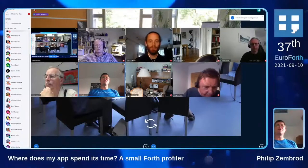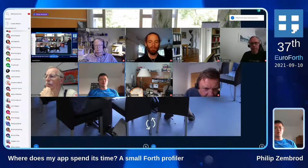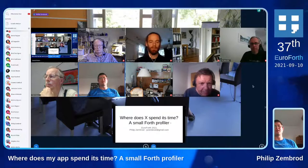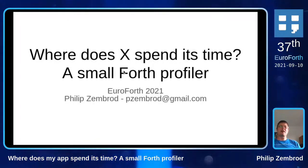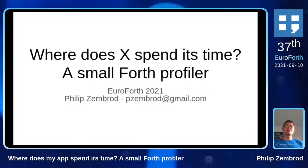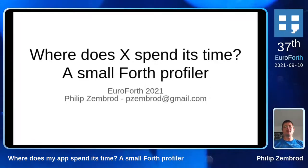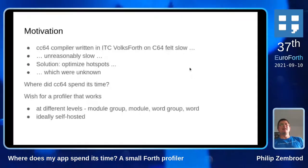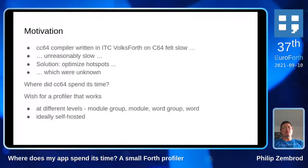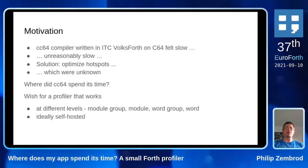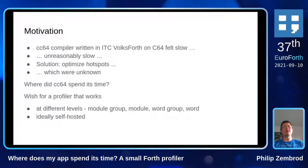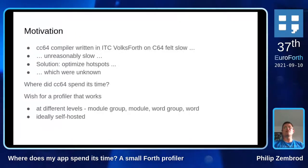I'm back with another recipe from the retro kitchen. After my small C compiler implemented in Forth that I presented last year, this time I want to talk about a profiler. At some point I was wondering where does this small C compiler spend its time. This is a C compiler on an indirect threaded 16-bit Forth running on the Commodore 64 retro, and I felt it was slow — unreasonably slow.